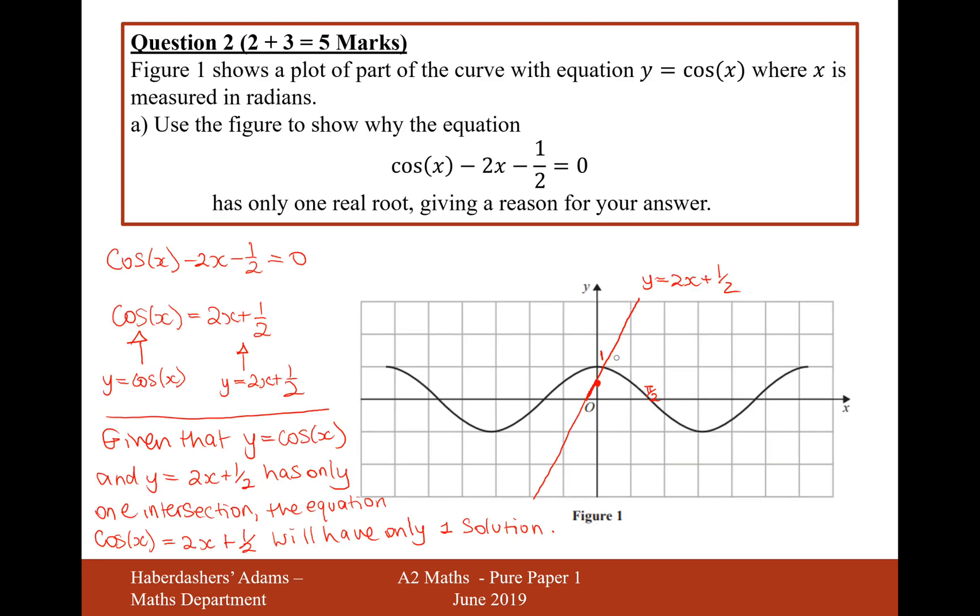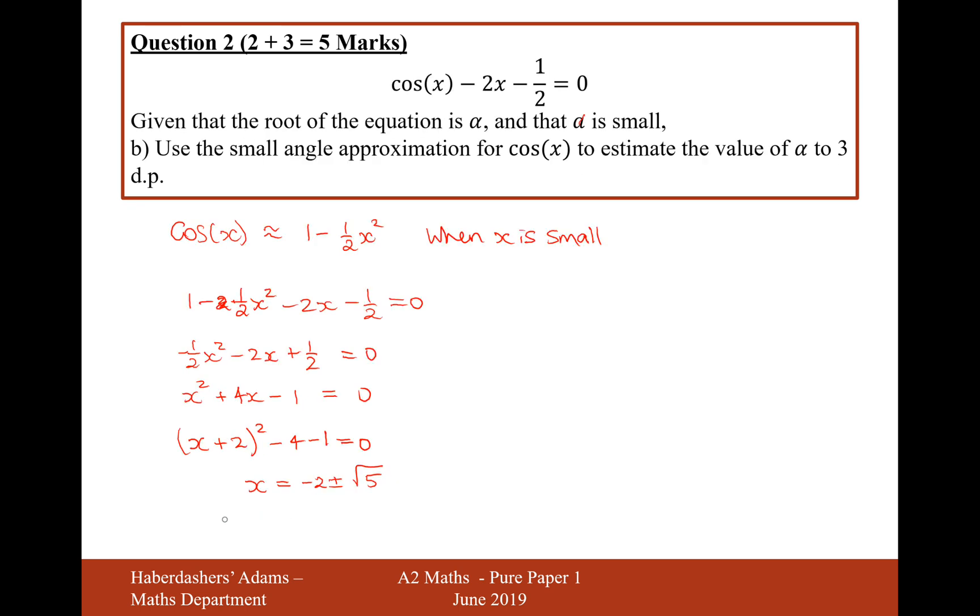But we can see from going back and having a look at where the solution is, it's going to be on the positive part of the solution. So therefore, as x is greater than zero, x equals minus 2 plus root 5. And now all that needs to be done is to convert this into three decimal places. Just grab my calculator here. x equals minus 2 plus root 5 equals, to three decimal places, 0.236.